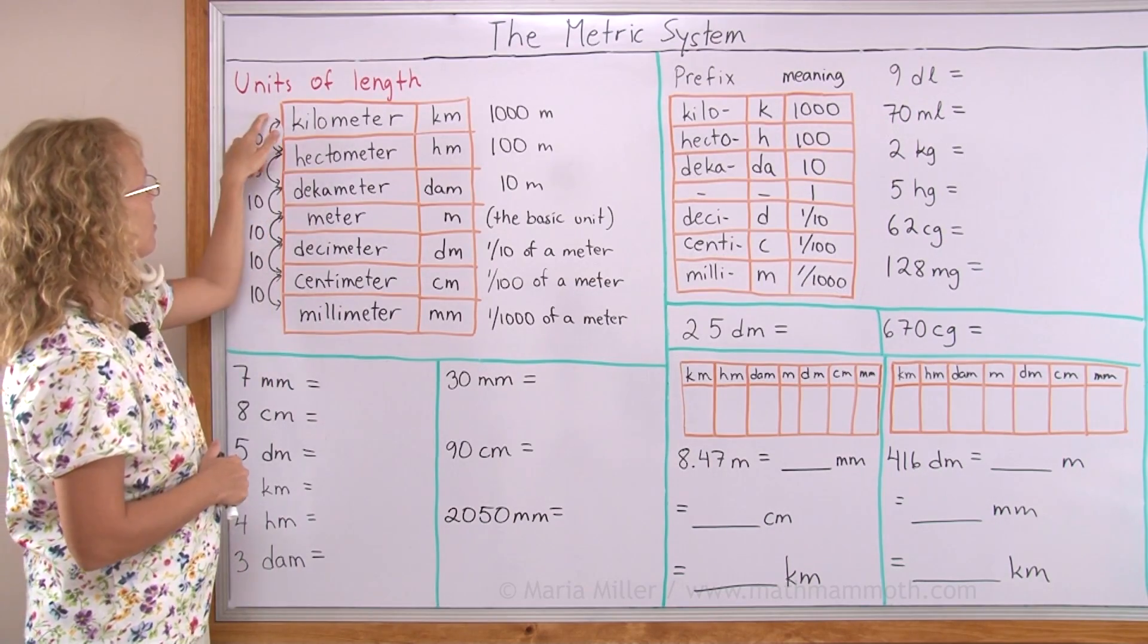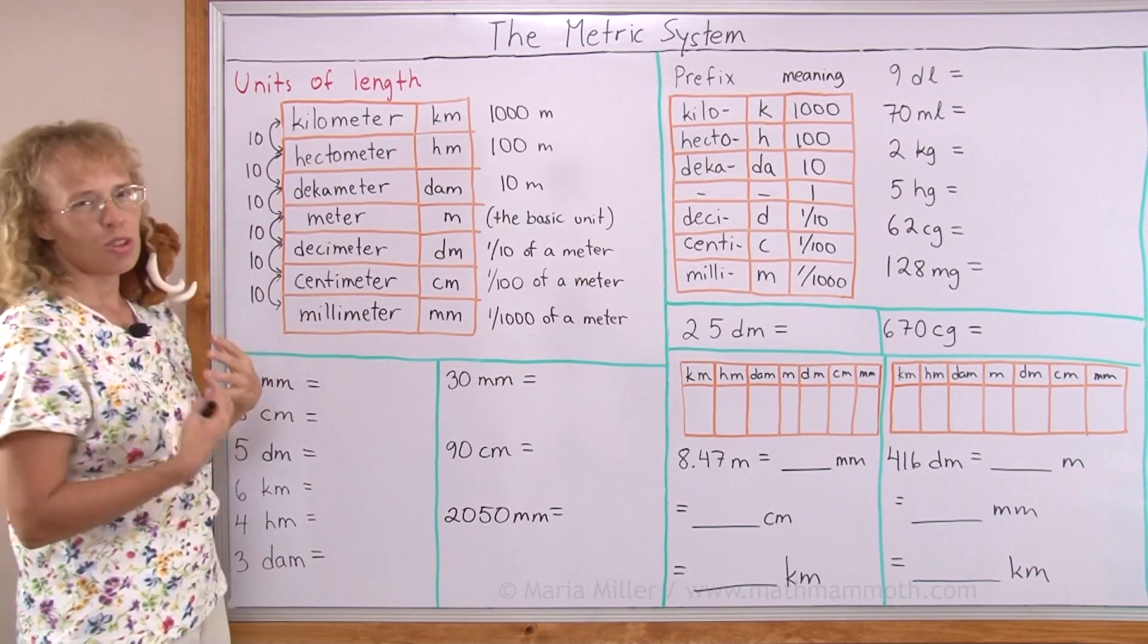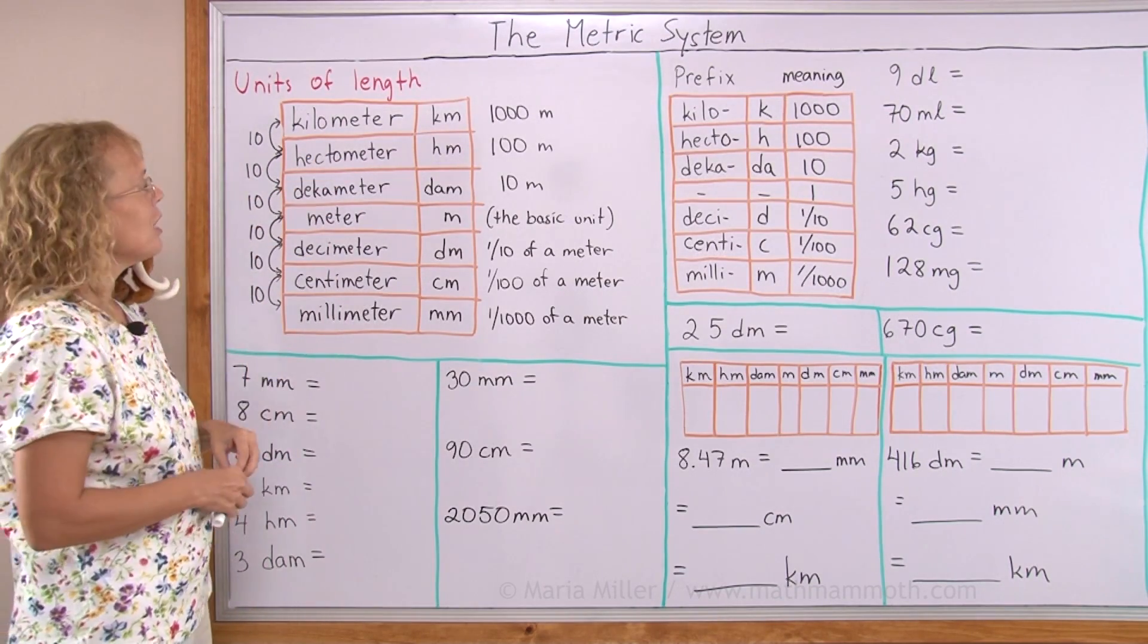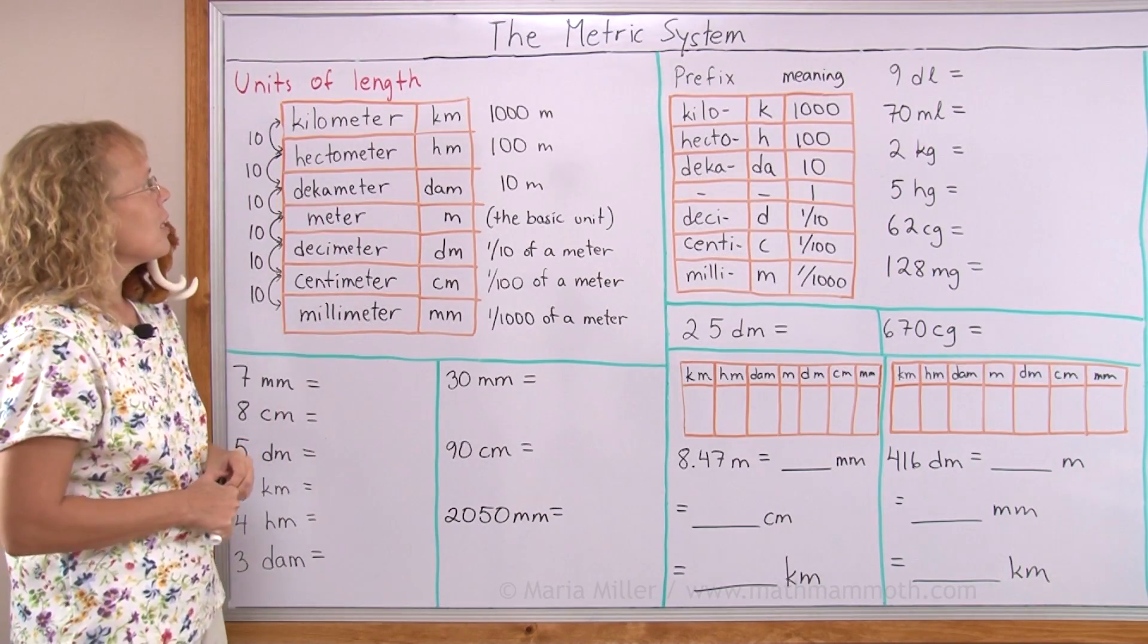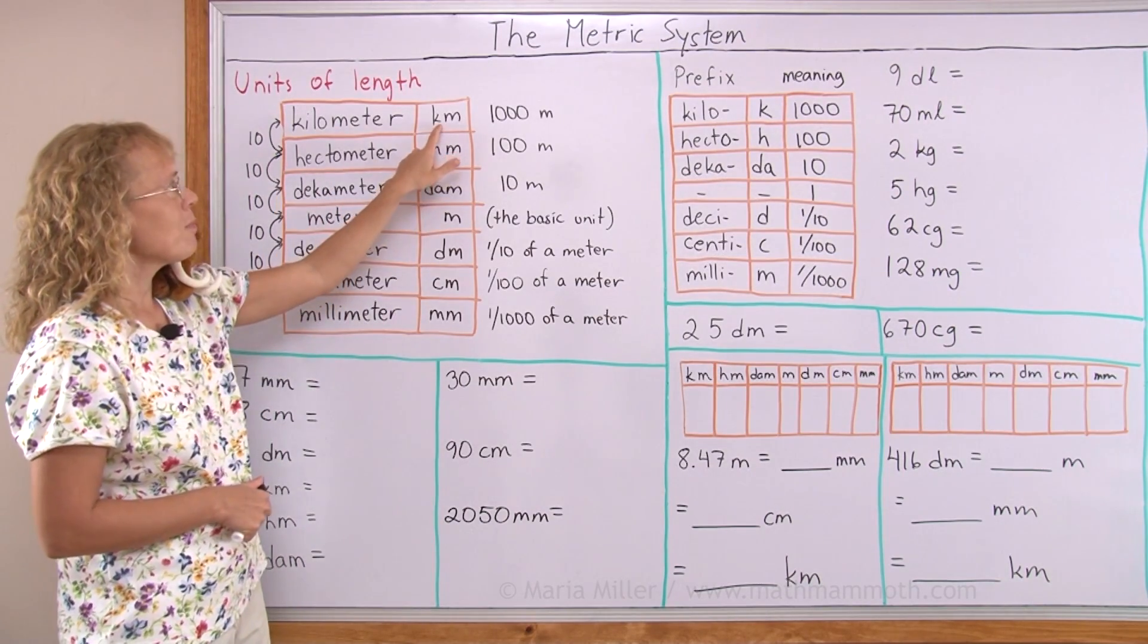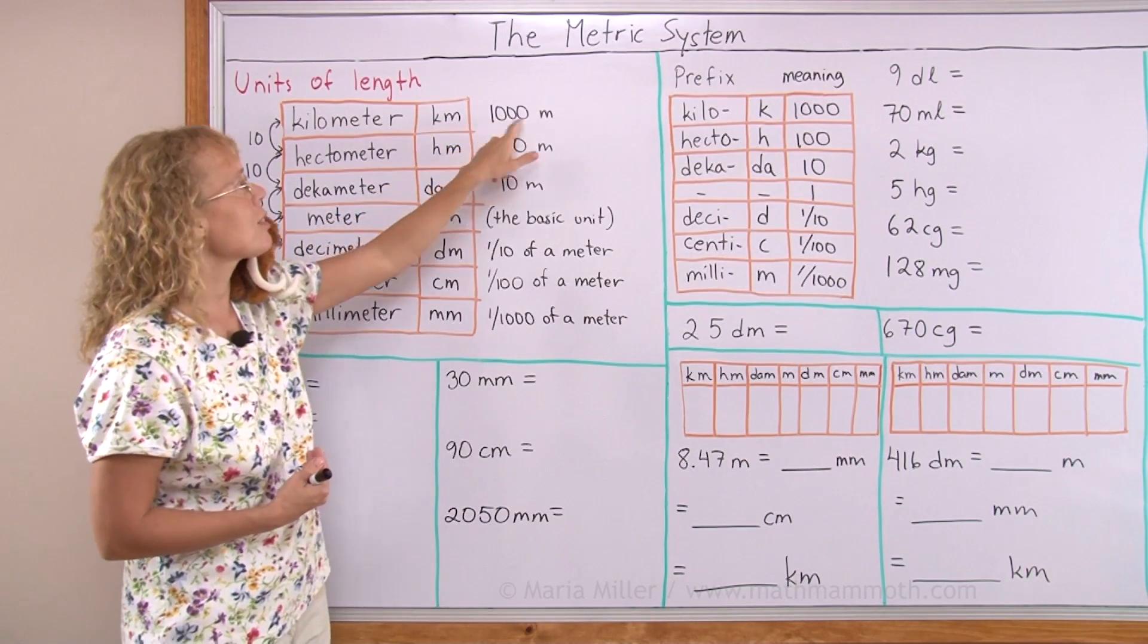From meter to kilometer, the factor is thousand as you know, but there's actually two units that are not used in normal life, but they are there anyway: decameter and hectometer. Kilometer, the word kilo here means thousand, so that's why this is thousand meters. The word hecto means hundred, so this is why hectometer is hundred meters.